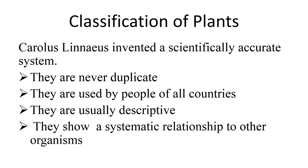Let's discuss the classification of plants. Since ancient times, various scientists have attempted to devise a system for grouping and naming living organisms. In the 18th century, Carolus Linnaeus, a Swedish botanist, invented a scientifically accurate system. His system, used internationally today, was an outstanding contribution to biology. Linnaeus rejected the common names of plants and gave each one a scientific name made up of Latin words.